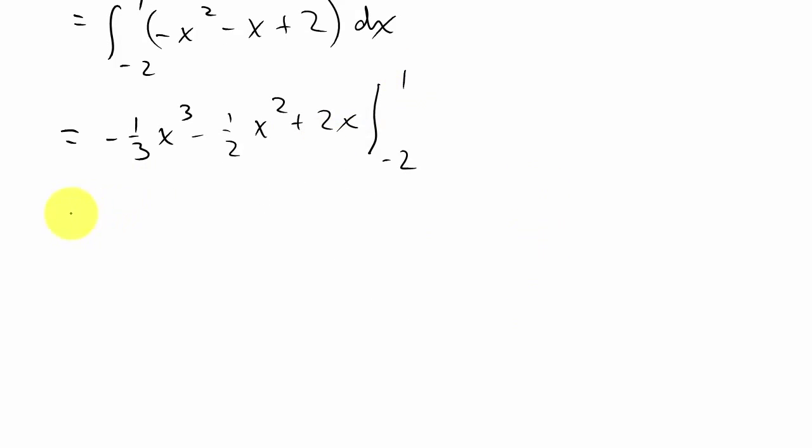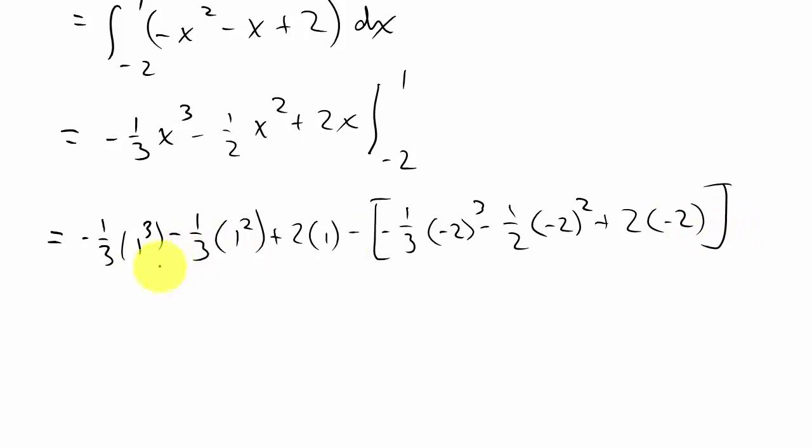So now let's just plug these in. That's going to be -⅓(1)³ - ½(1)² + 2(1) minus, and then we plug the -2 in: -⅓(-2)³ - ½(-2)² + 2(-2). And it's important, remember that when you're doing this and you're doing minus and you're plugging this in that you put this whole thing in parentheses because it is minus the whole thing. And then after we evaluate all this, that's going to give me an answer of 9/2.